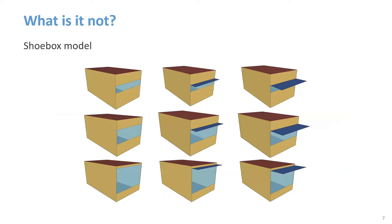What is it not? A simple box model is not the same thing as a shoebox model. While the terms are sometimes used interchangeably, the common definition of a shoebox model is one that represents an isolated portion of a building, such as a single room, while a simple box model typically represents a whole building. Both can be very useful, though a simple box model can answer a wider range of design questions.